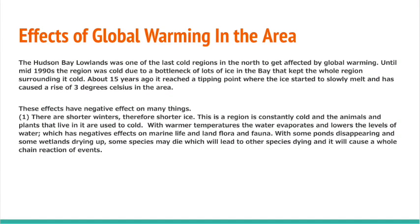The Hudson Bay lowlands was one of the last cold regions in the north to get affected by global warming. Until the mid-1990s, the region was cold due to a bottleneck of lots of ice in the bay that kept the whole surrounding region cold. About 15 years ago, it reached a tipping point where the ice started to slowly melt and has caused a rise of 3 degrees Celsius in the area.